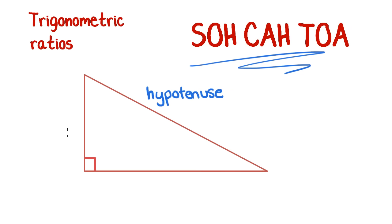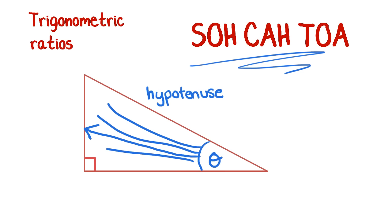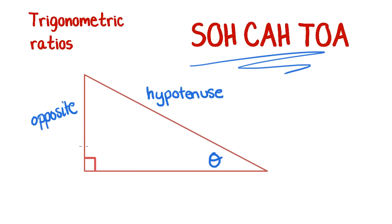The other two sides are going to be called the opposite and the adjacent, and that will depend on the relationship to which angle we're talking about. Say our mystery angle theta is down here — the side that's opposite it is the opposite side. The side that's left over, not already labelled, is next door to our angle, so we call that the adjacent side.